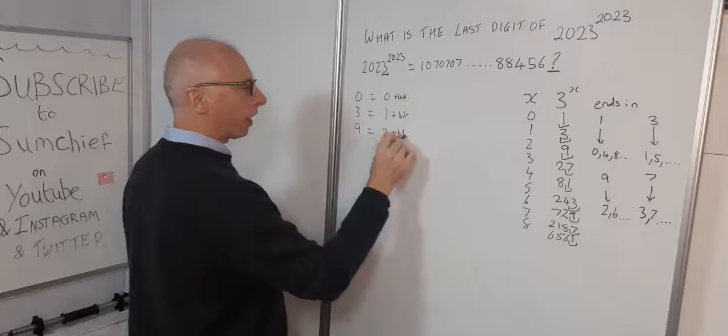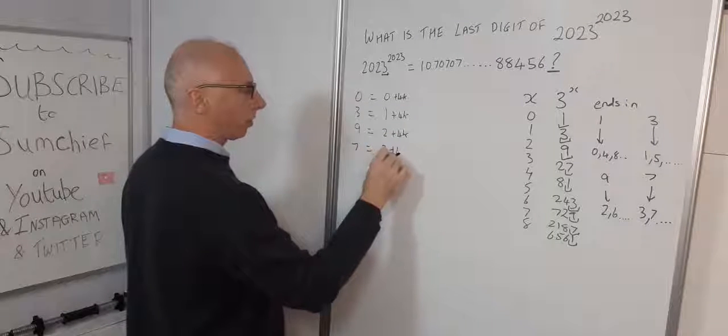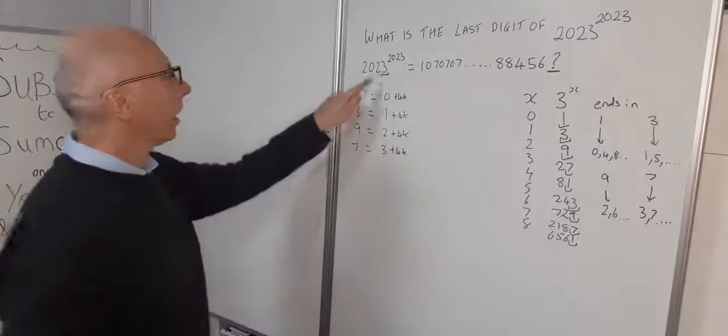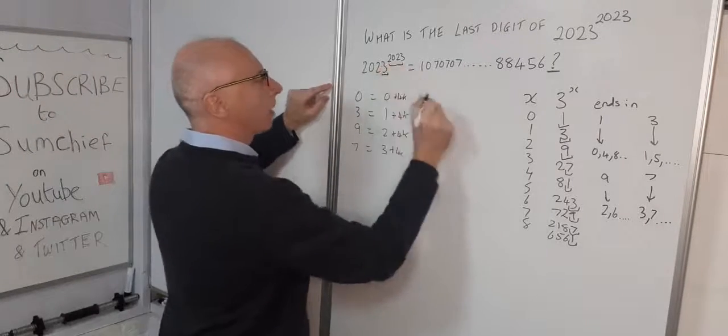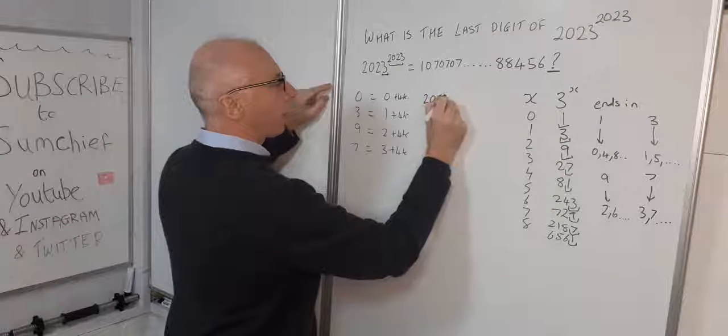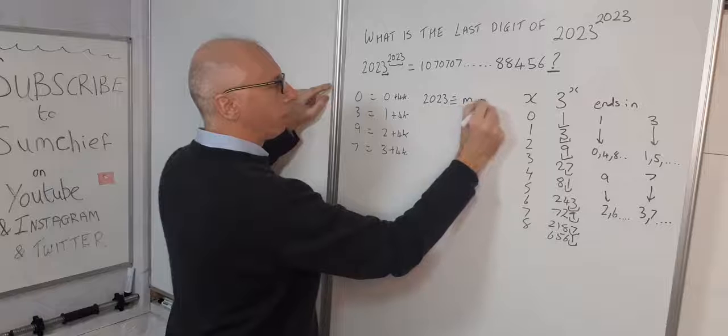2 + 4k. And for 7, 3 + 4k. Now we're interested in this power, 2023. We want to know what that is congruent to, a number m mod 4.